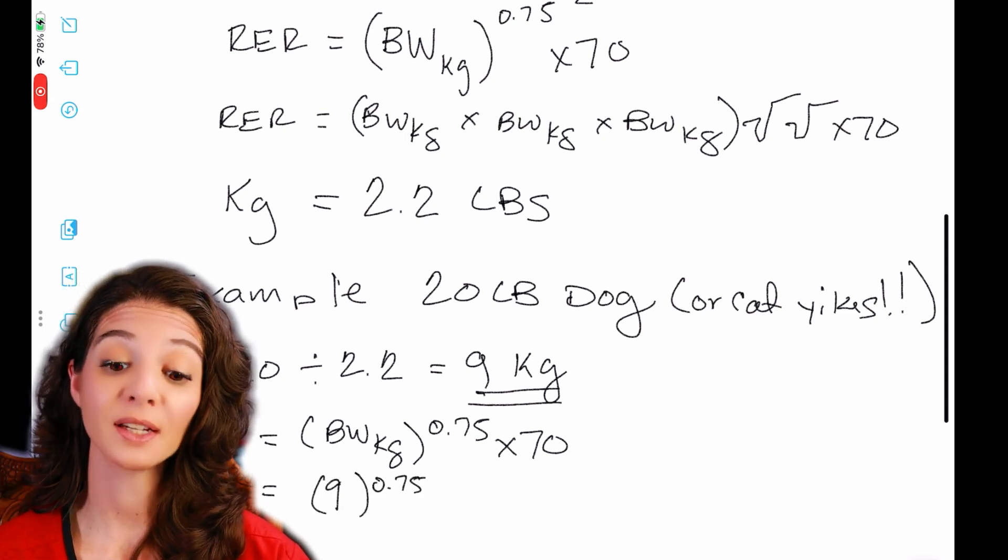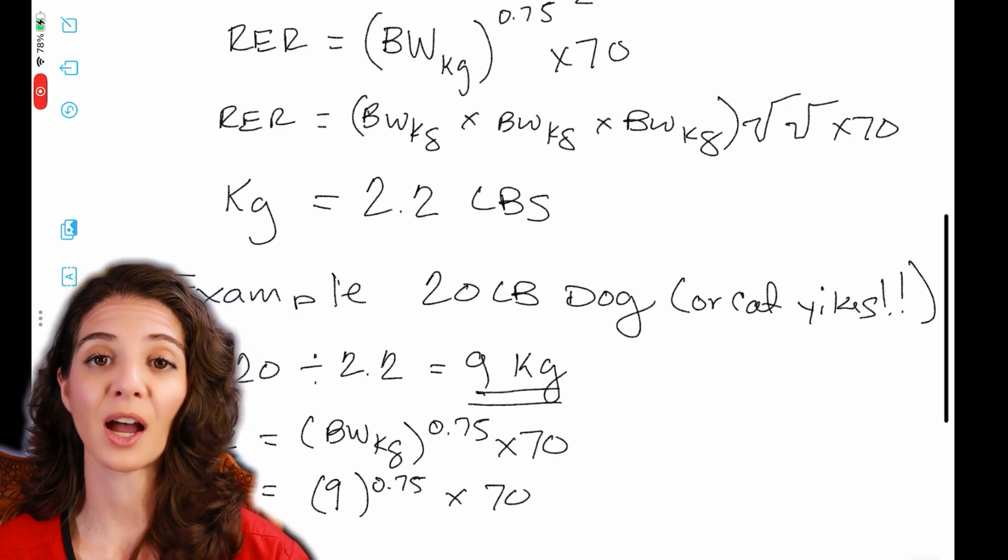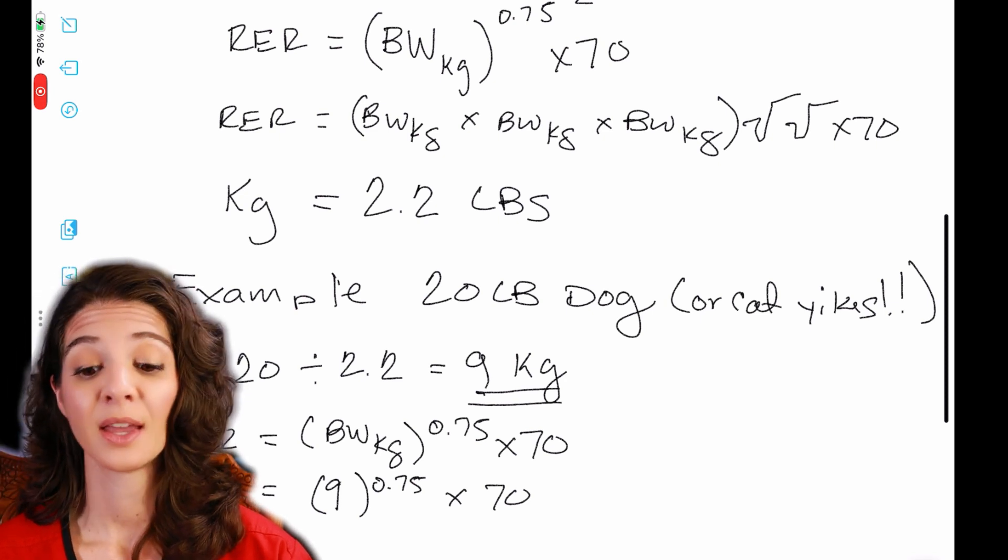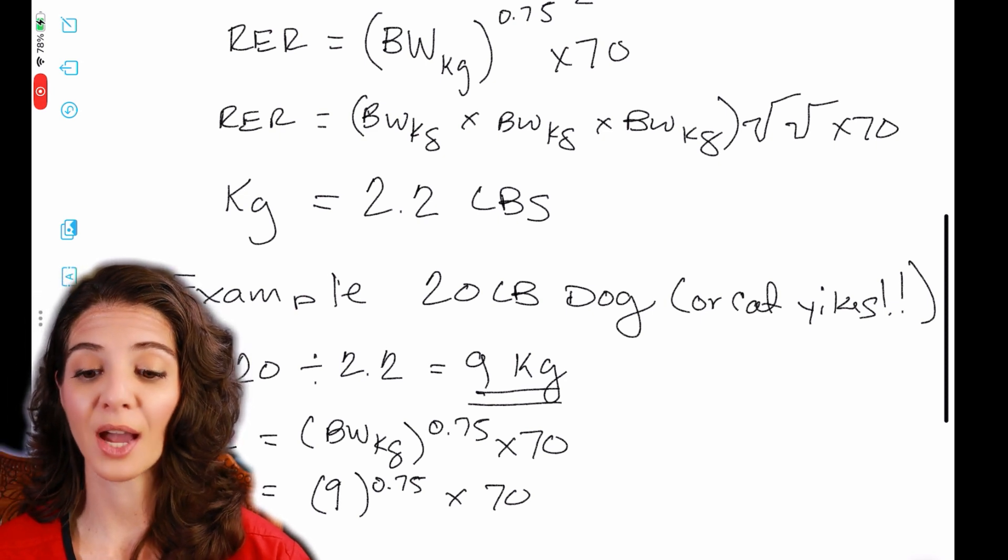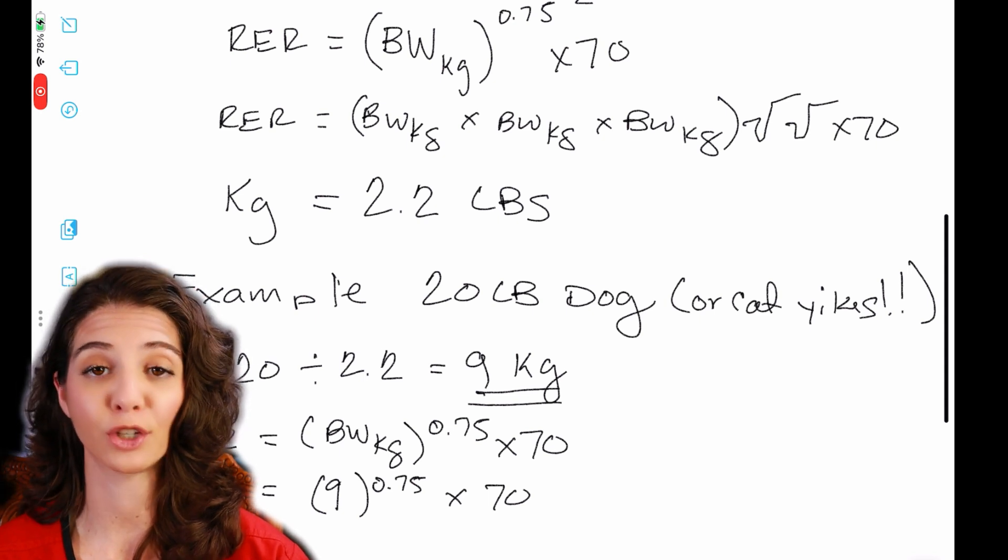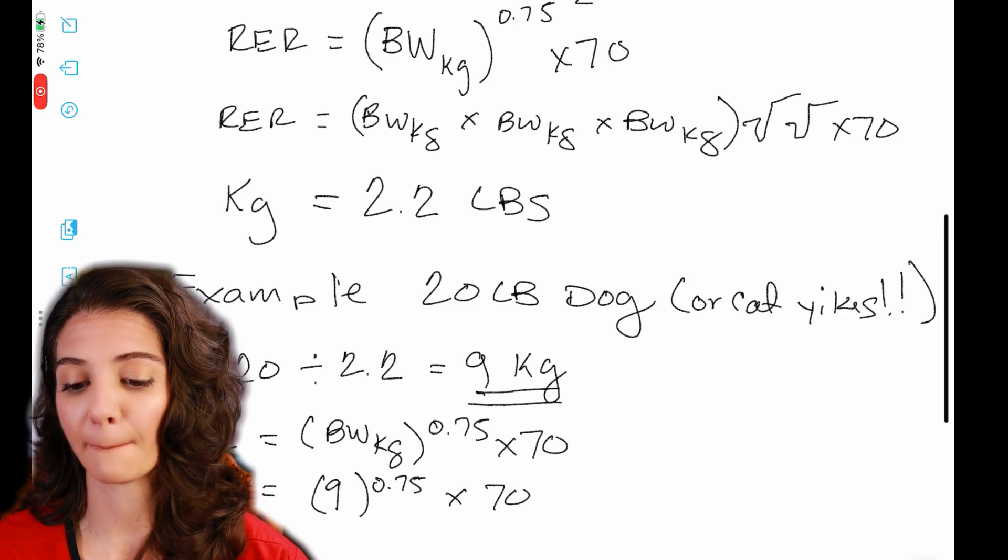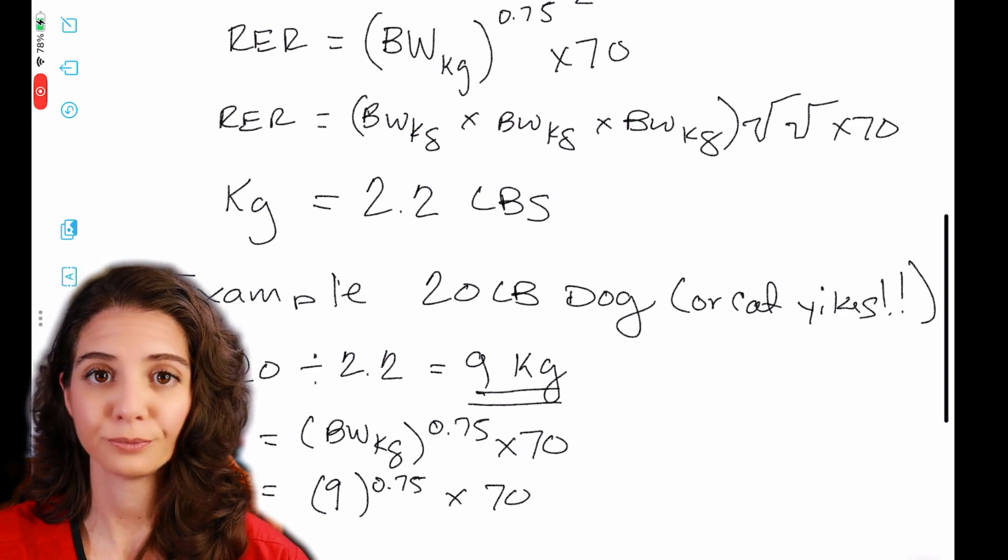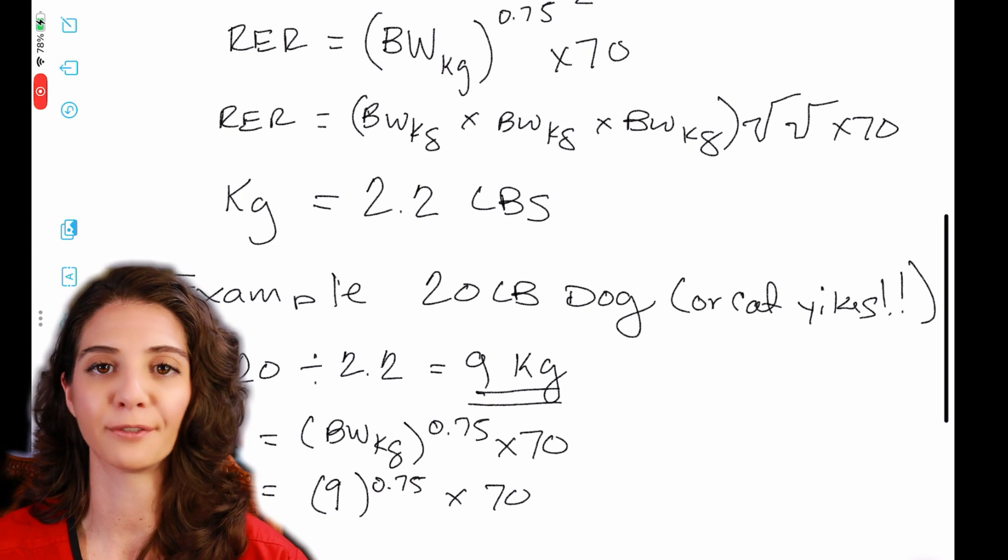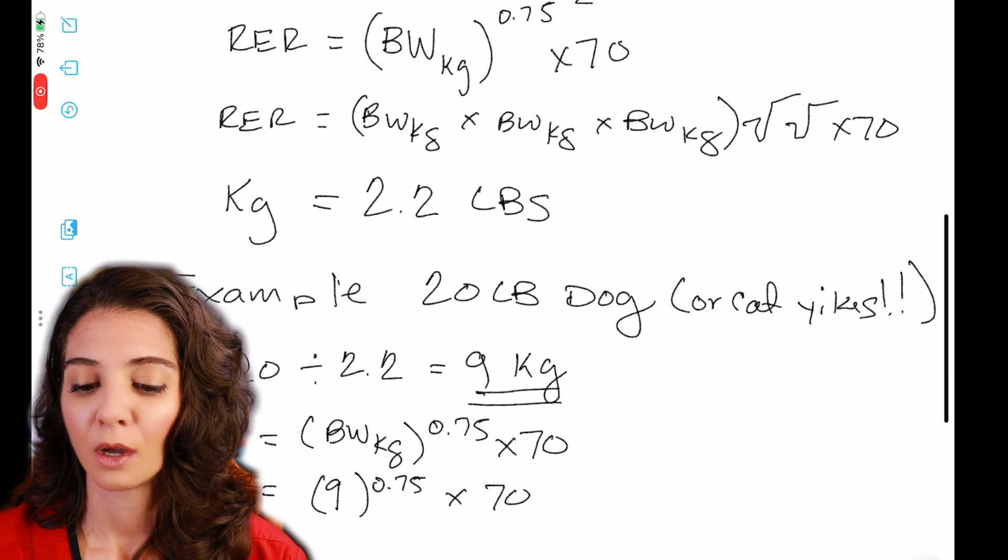Resting energy requirement is the body weight in kilograms to the 0.75 exponent times 70. So that's the resting energy requirement, nine kilograms to the 0.75 times 70. And then we need to go ahead and pull up our graphing calculator or calculator that can do exponents. There's several different ones that you can pick up on the app marketplace. So go ahead and do that.